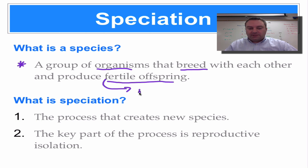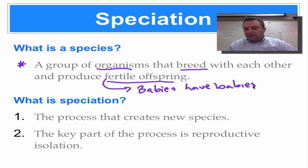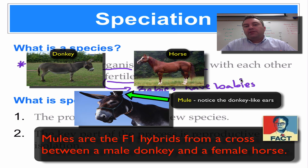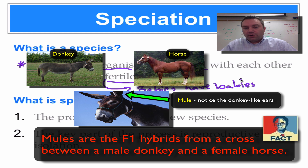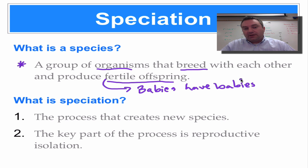Fertile means that the babies can later have their own babies. For example, when a horse and a donkey mate and they produce a mule, the mule is not able to produce its own young — so it's not a fertile offspring. That's why we can say a donkey and a horse are separate species. The mule is a hybrid, a mixture of two separate species, but it's not fertile.